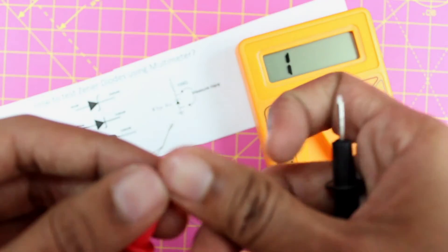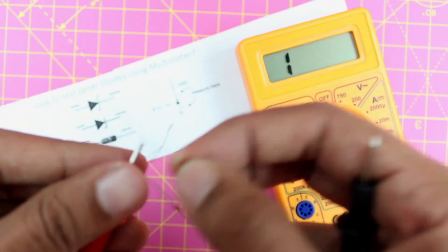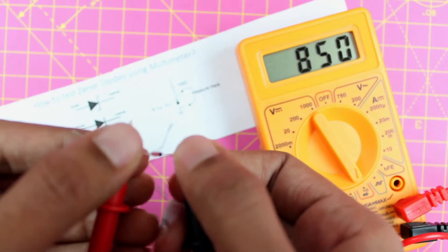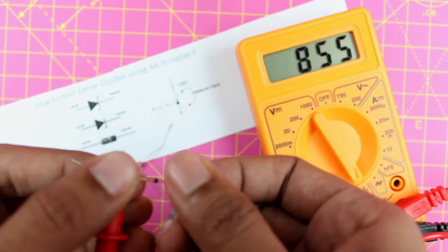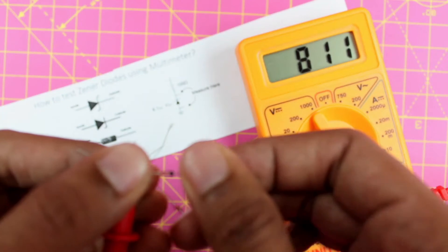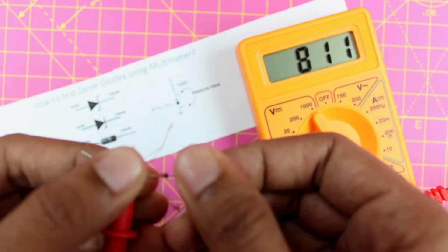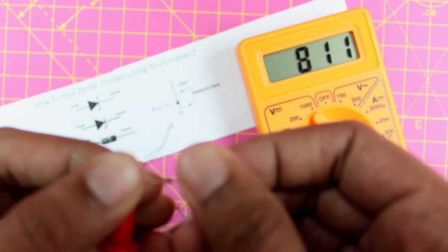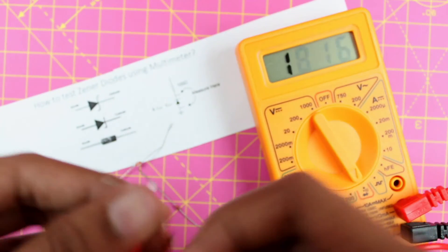In the forward bias, meaning when your red probe is in anode and black probe is in cathode, you should see a forward voltage drop which is around 0.8 volt. It can be anywhere between 0.6 to 0.8 for a zener diode.